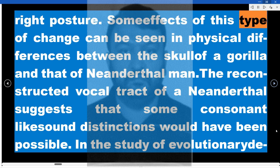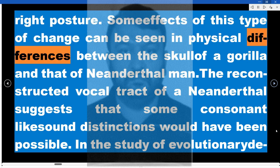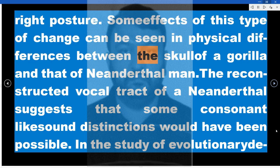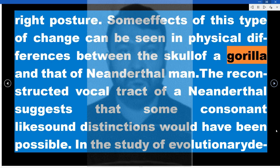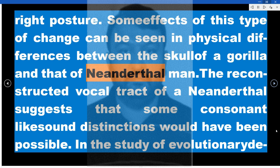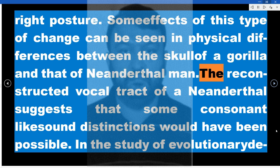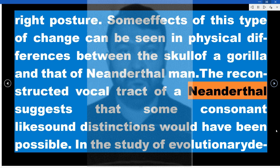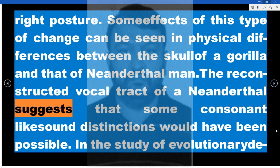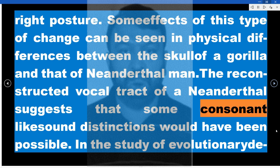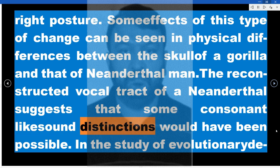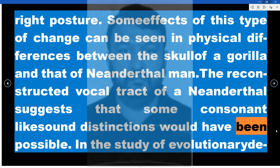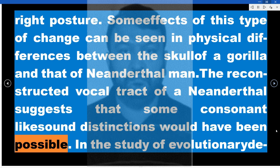Some effects of this type of change can be seen in physical differences between the skull of a gorilla and that of Neanderthal man. The reconstructed vocal tract of a Neanderthal suggests that some consonant-like sound distinctions would have been possible.